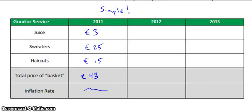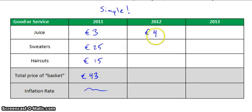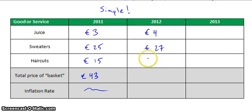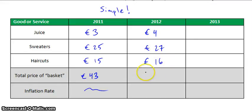The following year, we're going to see prices go up. So we're going to go 4, and 27, and 16 — something like that. So now when we add those three together, we get 47.